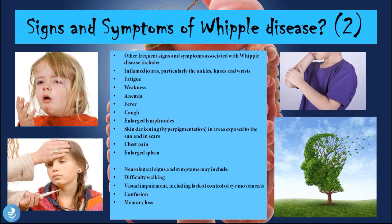Remember, Whipple disease also has central nervous system manifestations. These cause neurological signs and symptoms which include difficulty in walking, visual impairment including a lack of control of eye movements, confusion, and memory loss.